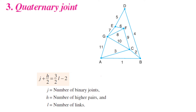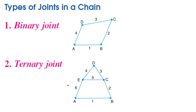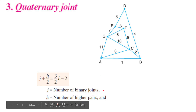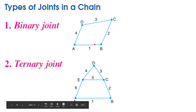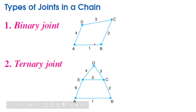Here j is the number of binary joints, h is the number of higher pairs — where a higher pair means a connection between two links made only at a point or a line — and l is the number of links. In the four-link example there are four links, no higher pairs (h = 0), four joints, and when we put l and j into the formula LHS equals RHS, confirming it is a kinematic chain.